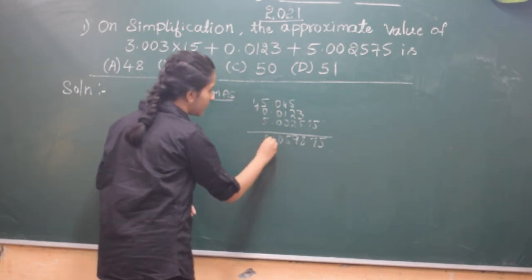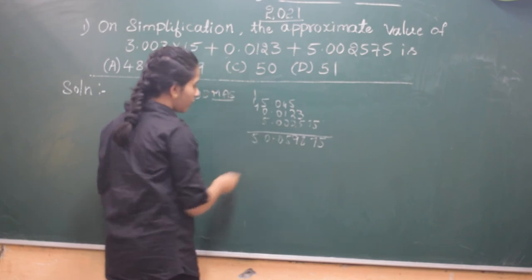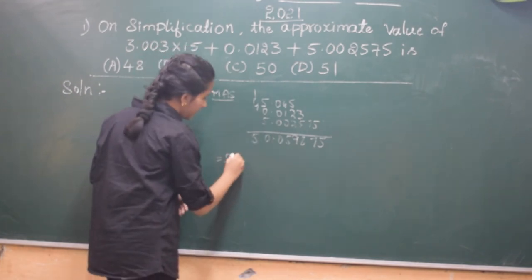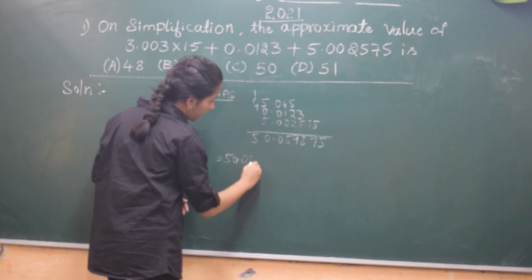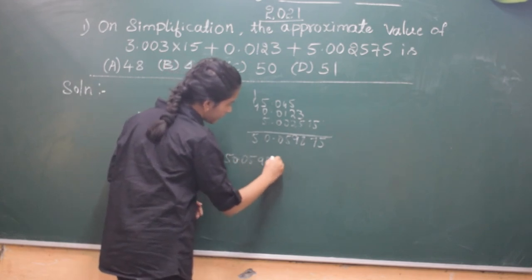5 plus 5, 10... 5. Now the answer what we got is 50 point 0, 5, 9, 8, 7, 5.